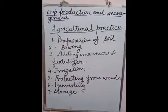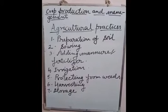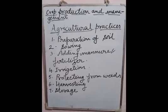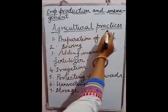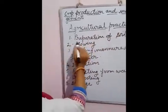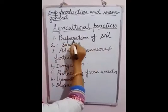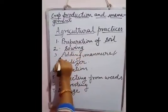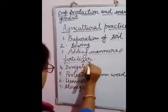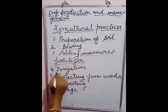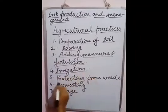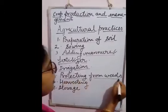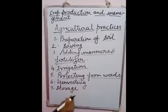Cultivation of crops involves several activities undertaken by the farmer over a period of time, called agricultural practices. These activities are: first, preparation of the soil; second, sowing; third, adding manure and fertilizers; fourth, irrigation; fifth, protecting from weeds; sixth, harvesting; and seventh, storage.